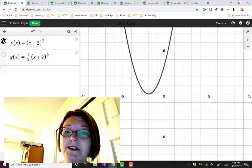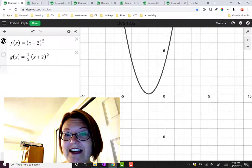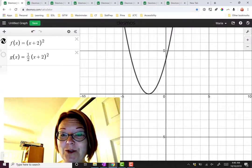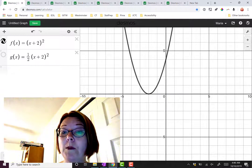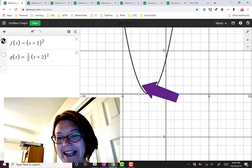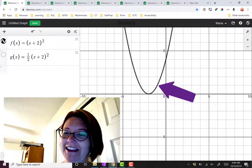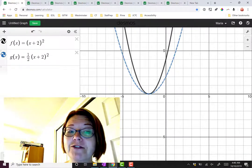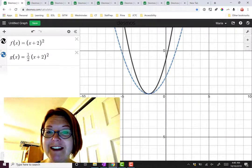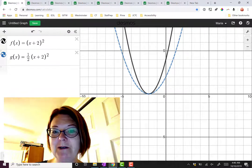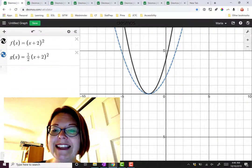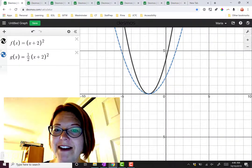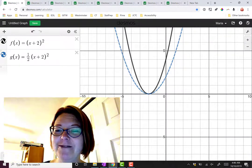x plus 2, the quantity squared, is a parabola with a vertex at negative 2, 0, opening up with points at negative 3, 1 and negative 1, 1. Let's now include the graph of g(x) equals 1 half times the quantity x plus 2 squared. In this case, we see that every y value on the original graph of f(x) is halved from its original value.